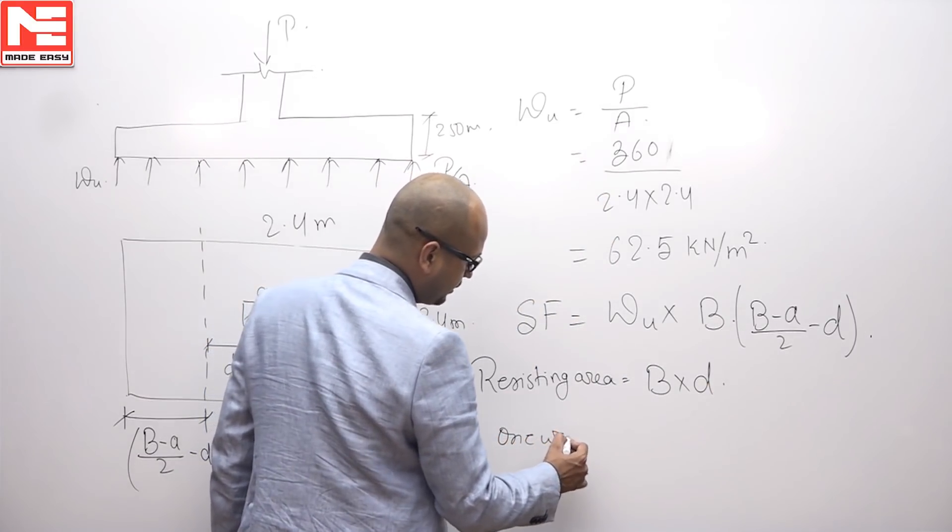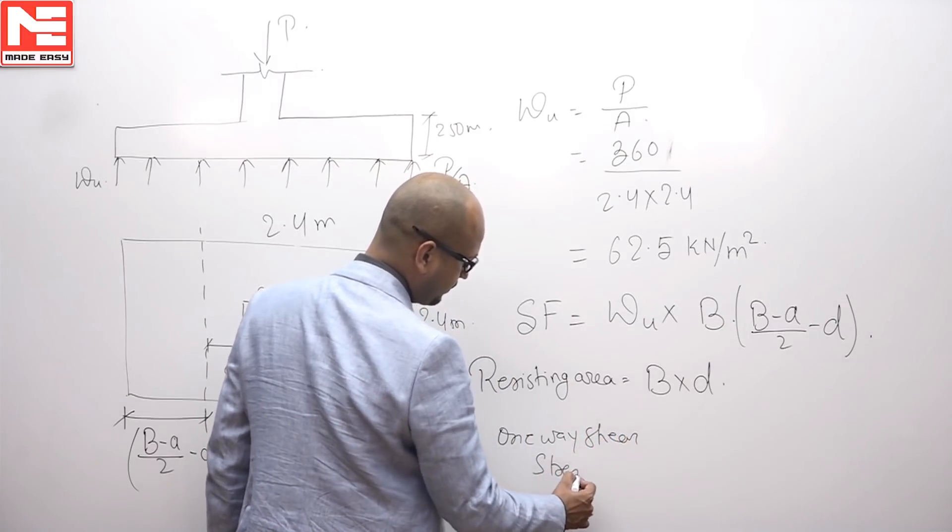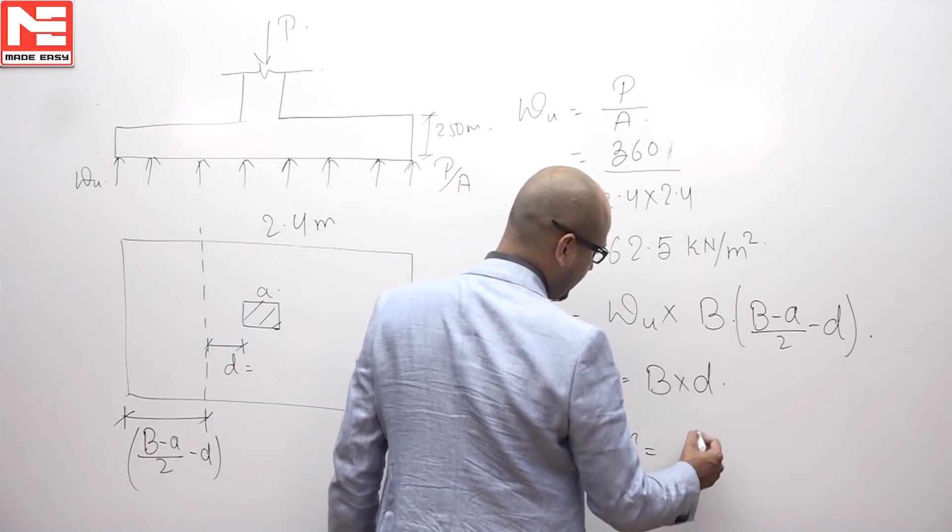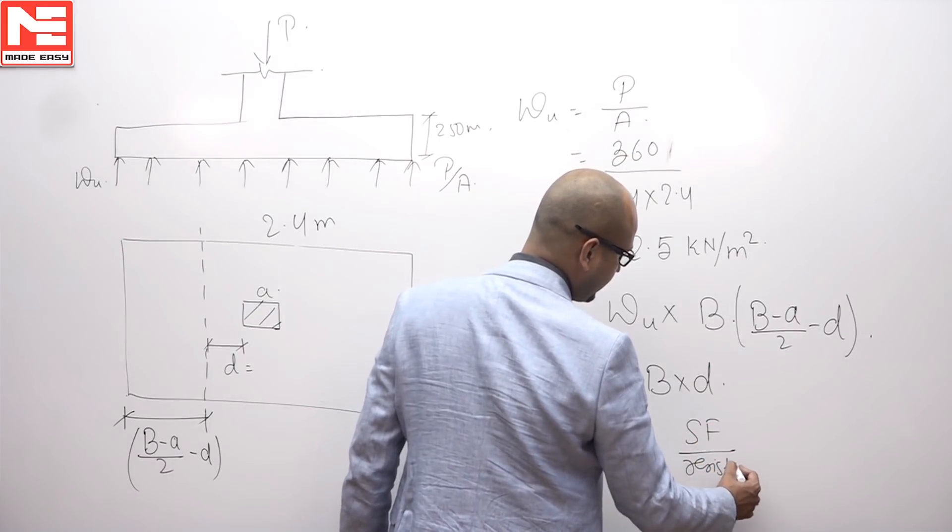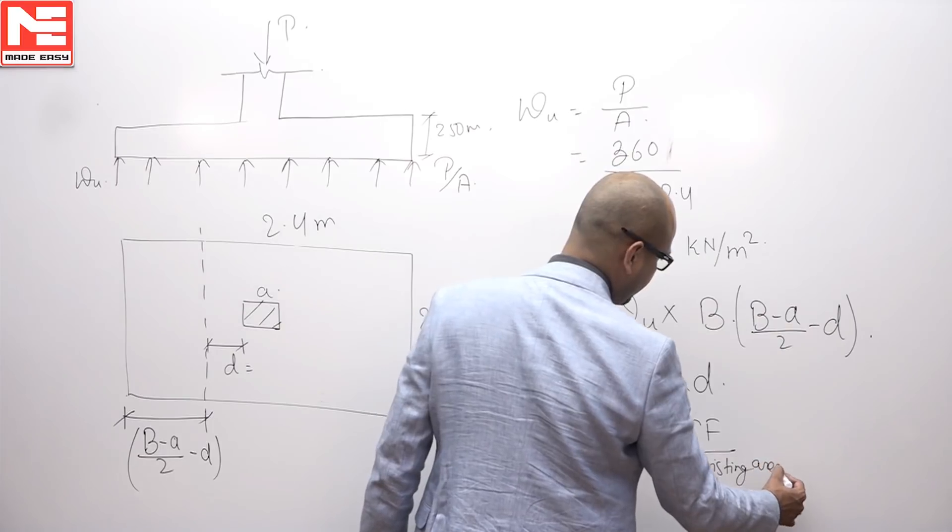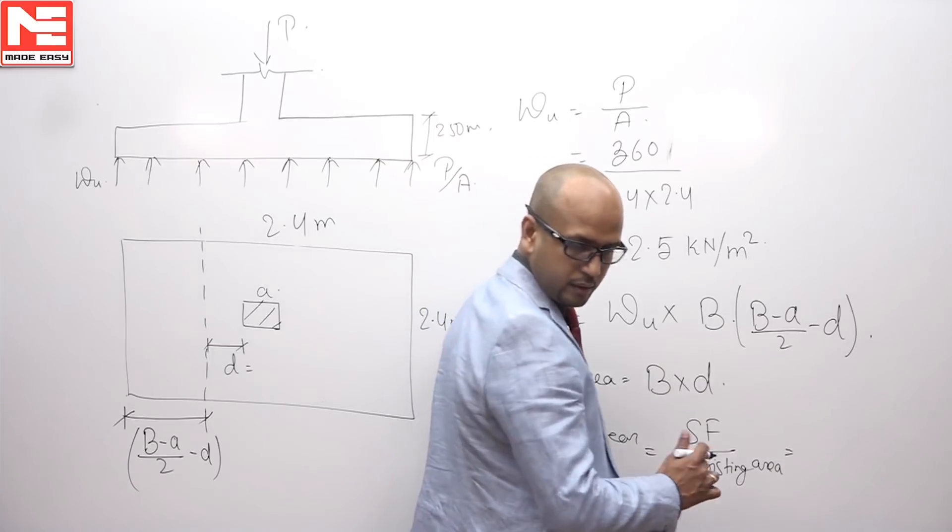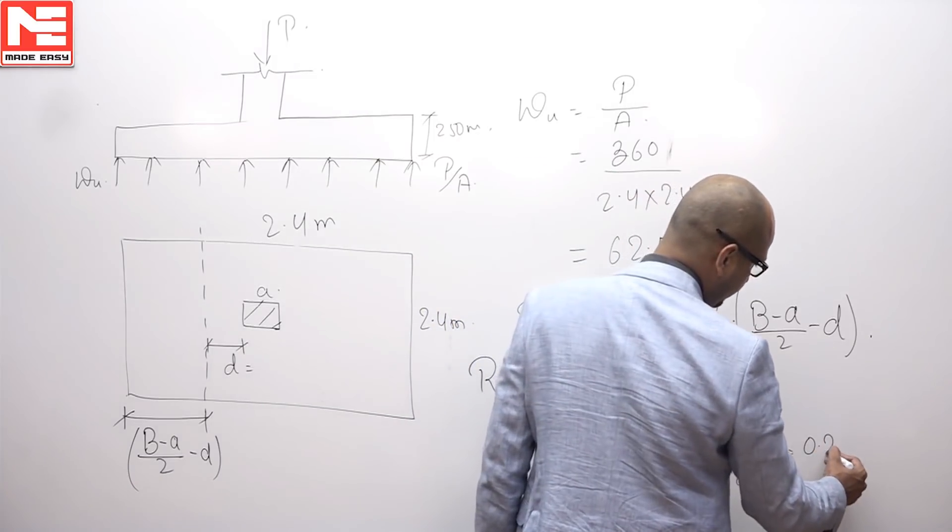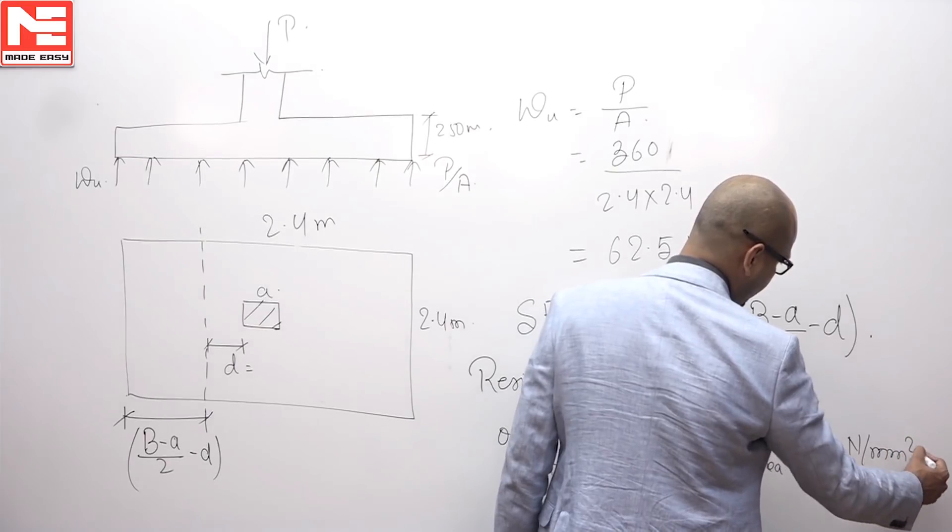One way shear stress is equal to shear force divided by resisting area. This will give you final value equal to 0.2 Newton per mm square.